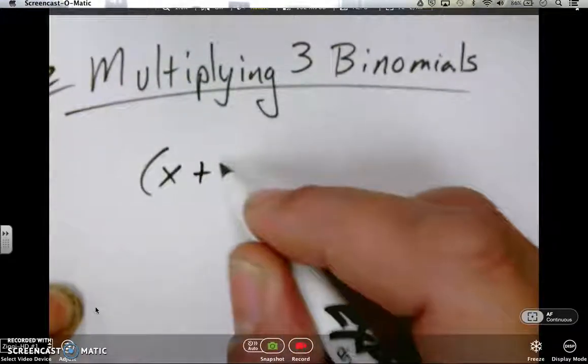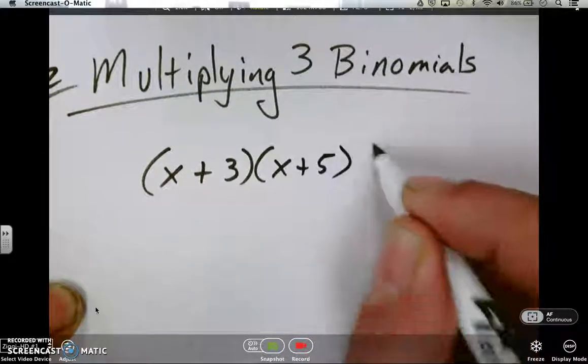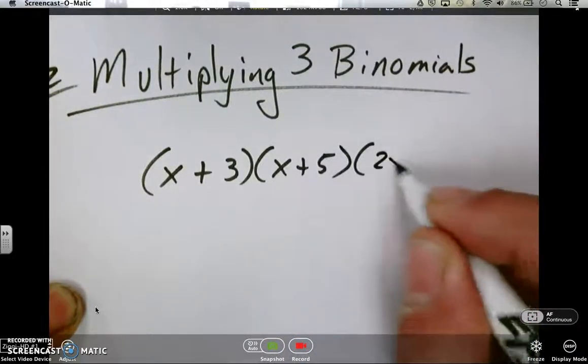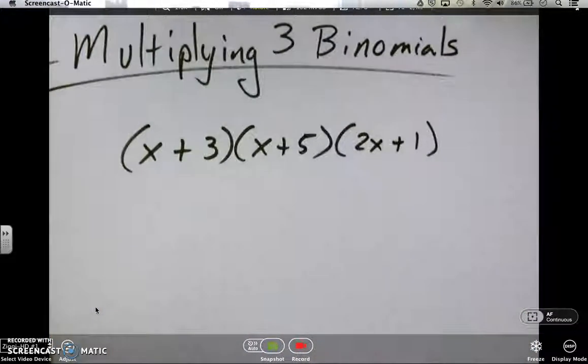That's something like x plus 3, x plus 5, and we'll throw in a number here, 2x plus 1. Okay, something like that. Oh, sorry about that. Okay, here we go.